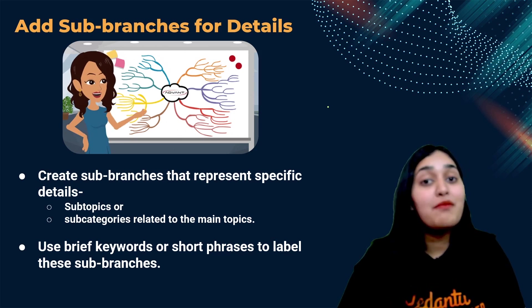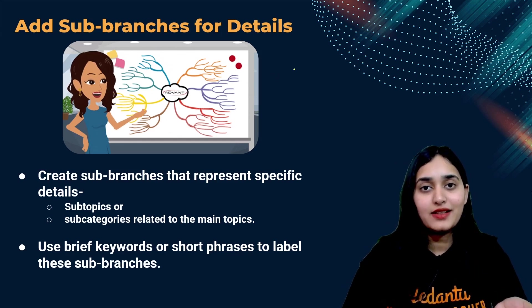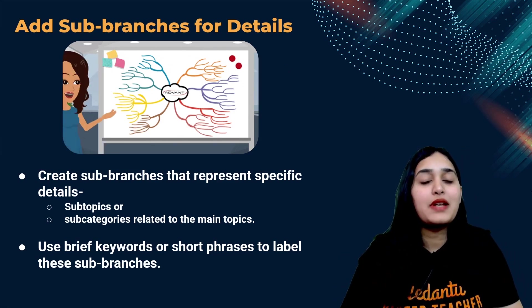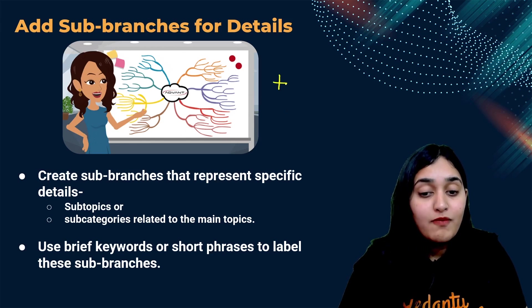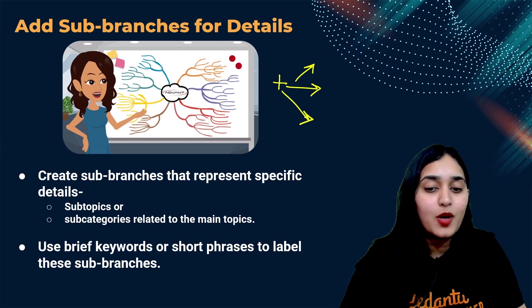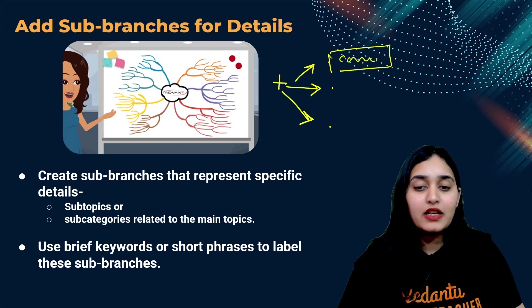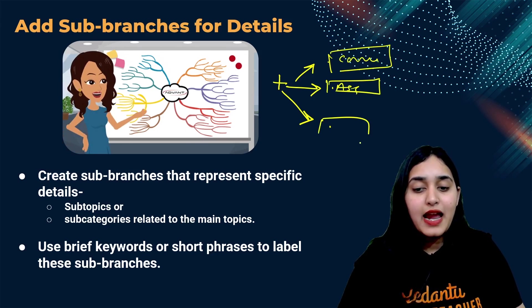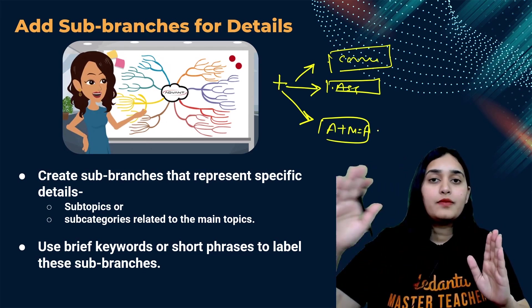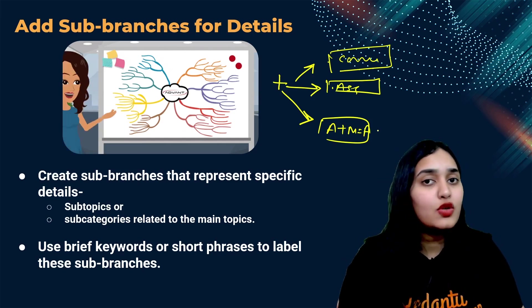Now add some branches for details. Now most of the time it will be like every time you will not have levels. Sometimes you will need like for example, just now we have seen that we have addition, multiplication, subtraction of matrix. But in addition of matrix, you have properties, commutative property, associative property, identity property. So for listing out property, you're not going to make level. You will simply write down the property here, commutative property, here associative property, here additive identity property. So like this, you will get basically details that these are the properties I have learned for addition of a matrix. So you made the sub branches.